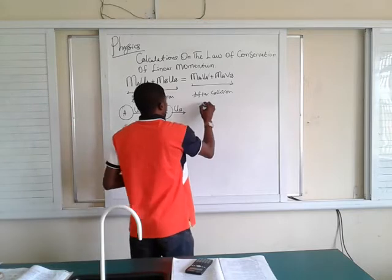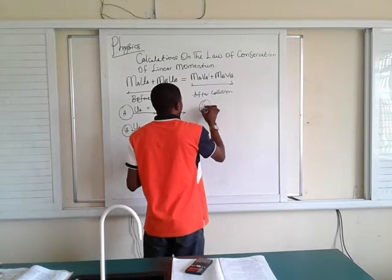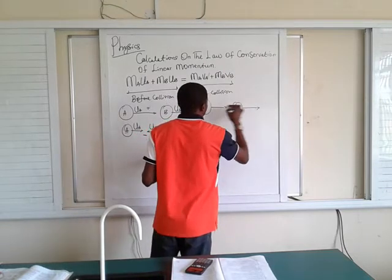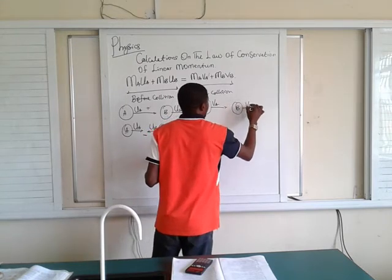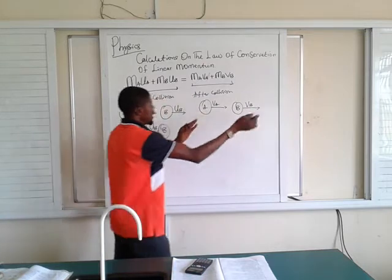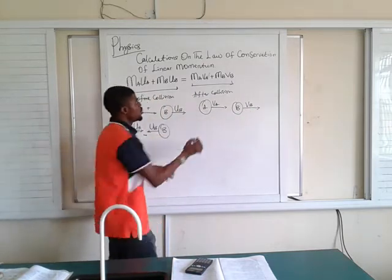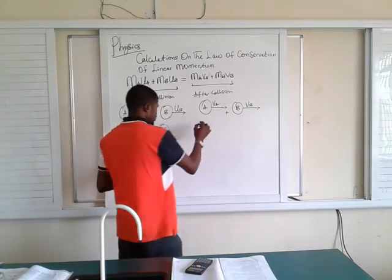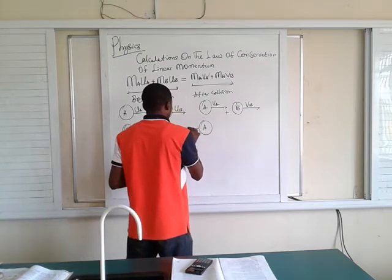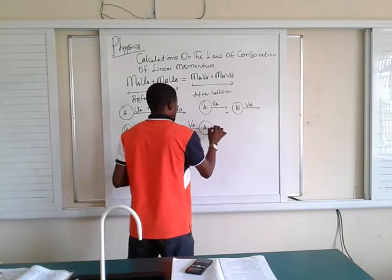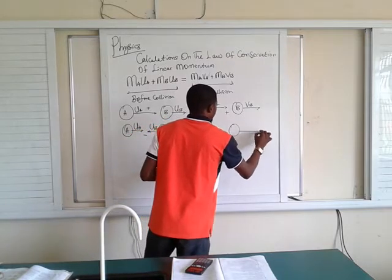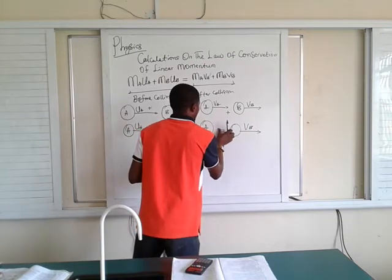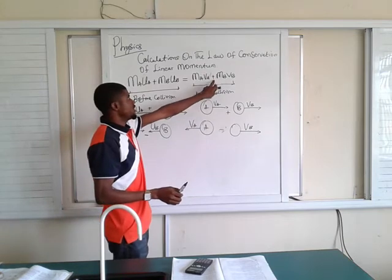Similarly, if body A and B after collision move with final velocities in the same direction, you use a plus sign on the right-hand side. But if after collision they move with separate velocities in opposite directions, you put a negative sign for one of those velocity terms.